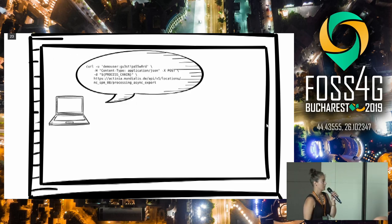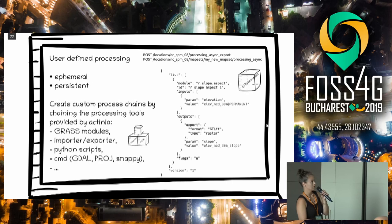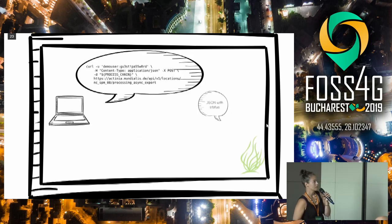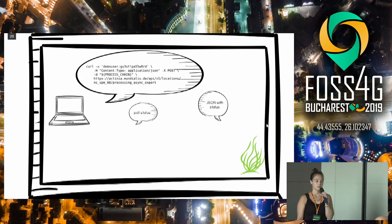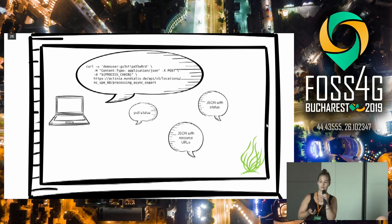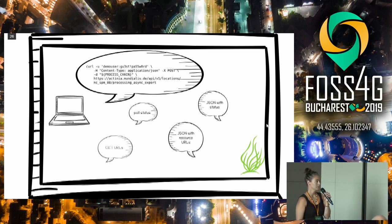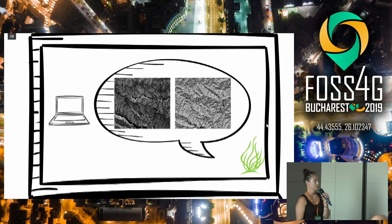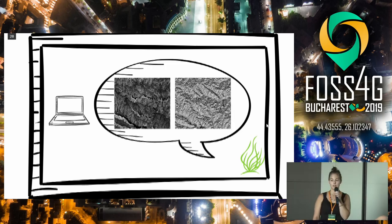Here's an example: I call this generic endpoint with my process chain — it's a slope/aspect analysis on a one-third arc-second map. Then Actinia responds with a JSON telling you the status of the processing. One possibility is to poll the status and ask whether it's still running. When Actinia is finished, the JSON looks different and I can see the results. Another possibility is to provide a web endpoint, and then Actinia just notifies you when processing is finished. Once done, I can request the URLs that Actinia sent me from the processing.